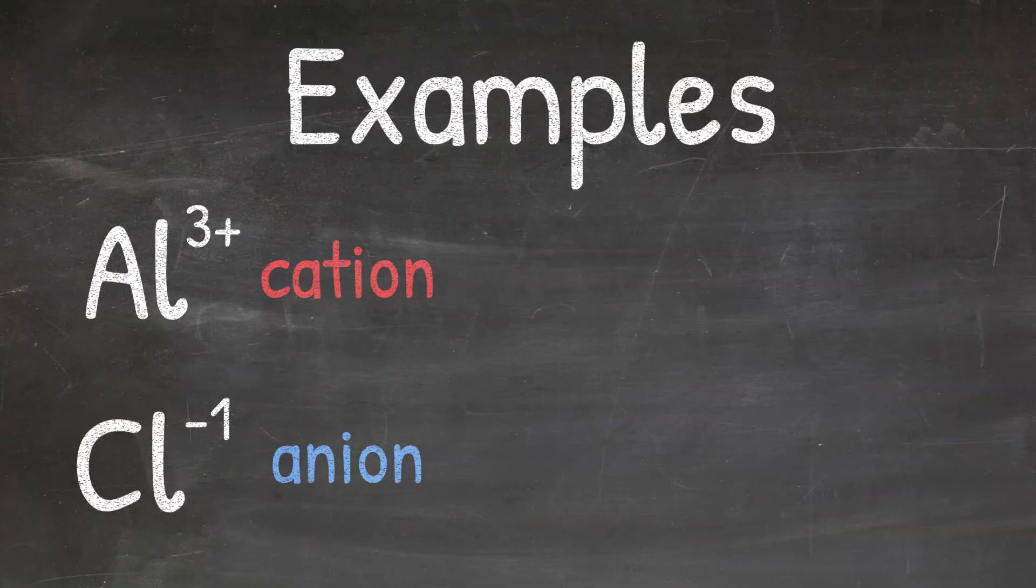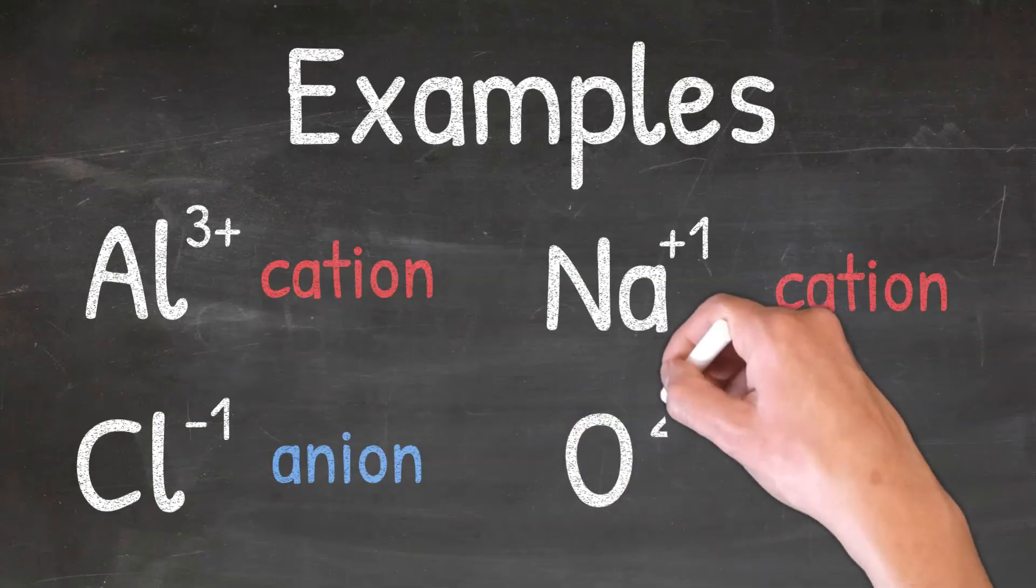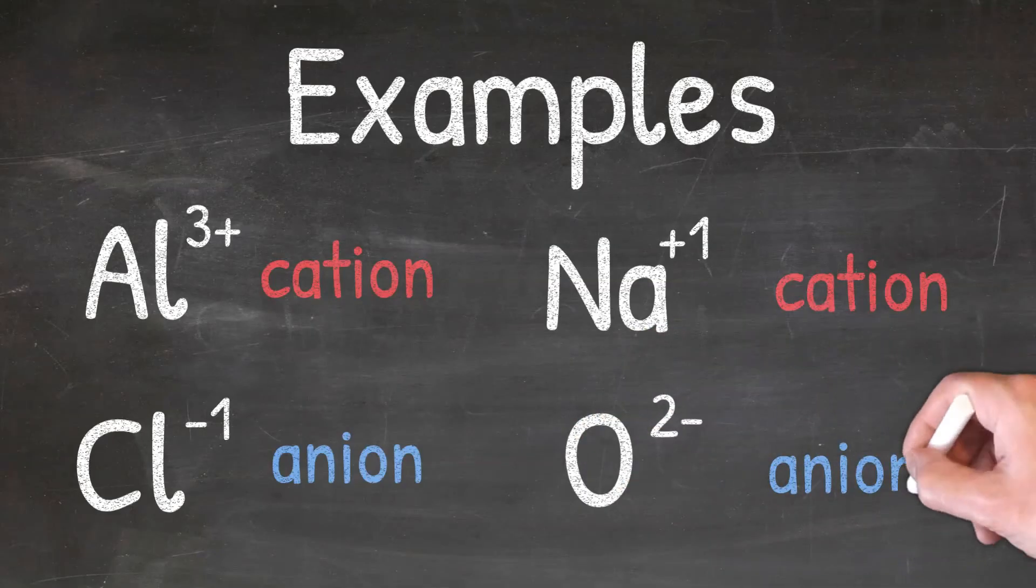Our next example we'll look at is Na+, and this would be a cation because it has a positive charge. And our final example is O2-, which would be considered an anion because it has a negative charge.